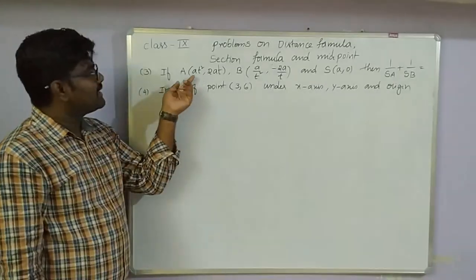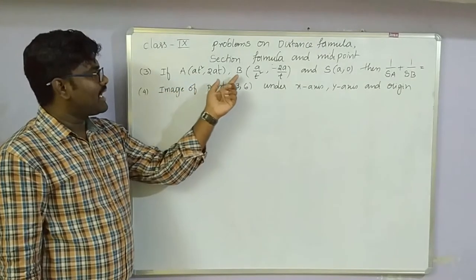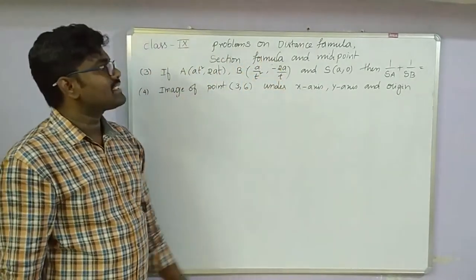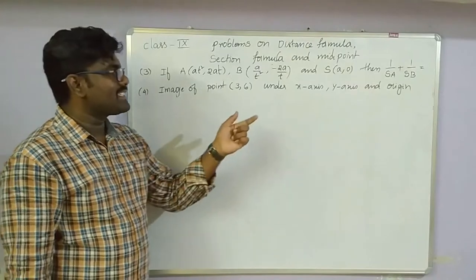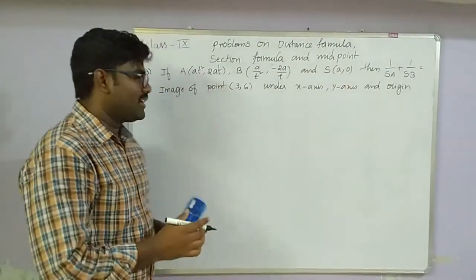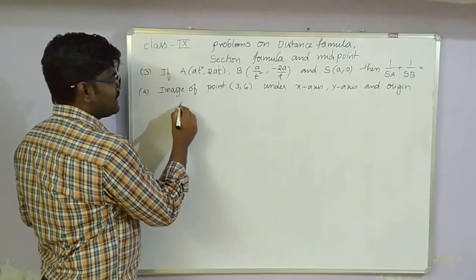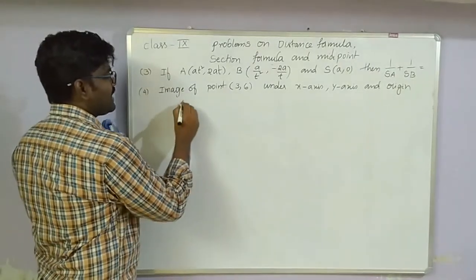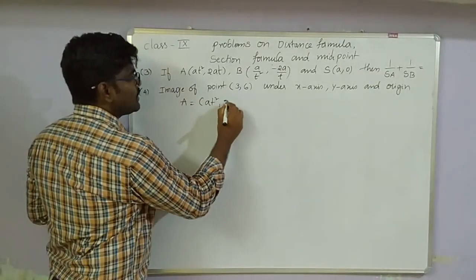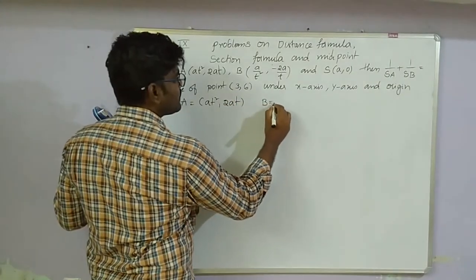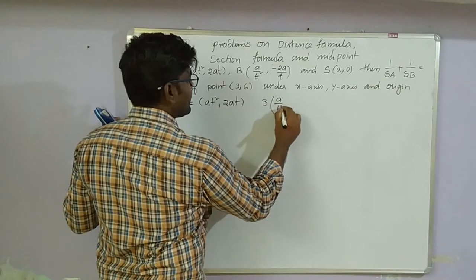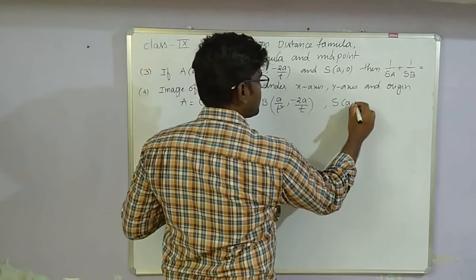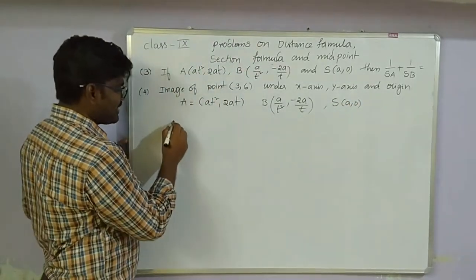Third problem: given A(at², 2at), B(a/t², -2a/t), and S(a, 0). Find 1/SA + 1/SB. First find SA — the distance from S(a,0) to A(at², 2at). Treat S as (x1, y1) and A as (x2, y2) and apply the distance formula.